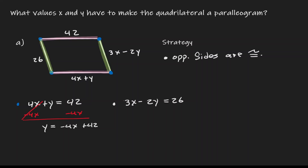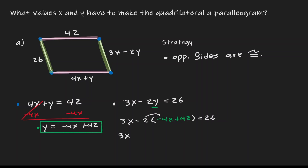Let me set that aside. Now in the second equation, let me substitute this expression for y. So now we have 3x minus 2 times the quantity negative 4x plus 42, close parenthesis, equals 26. Distributing gives us 3x plus 8x, and distributing once more gives us negative 84, equals 26.